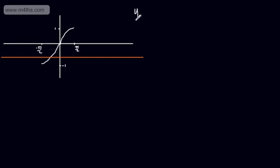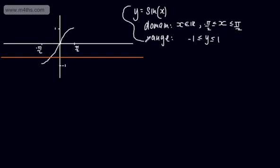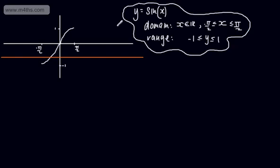So we have y equals sine x. The domain is x belongs to the reals, restricted such that x is between negative pi by 2 and positive pi by 2. That gives us a range of y between negative 1 and positive 1. So y equals sine x now has a restricted domain giving us a 1 to 1 function. Once we have a 1 to 1 function, we can look at finding the inverse.